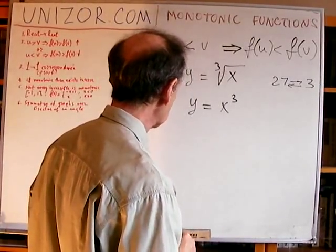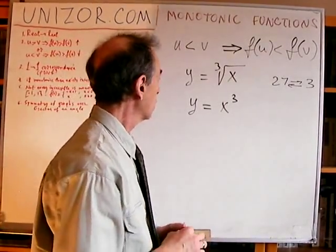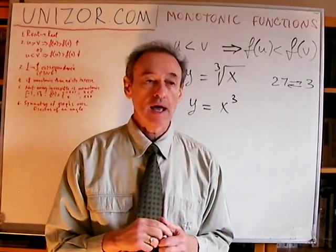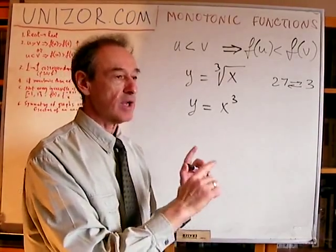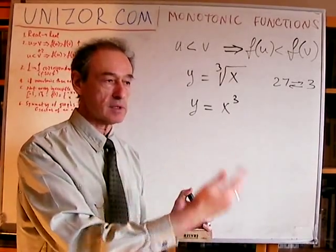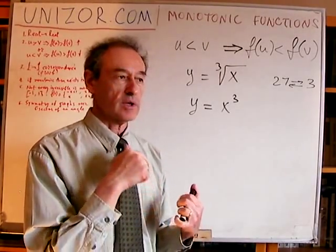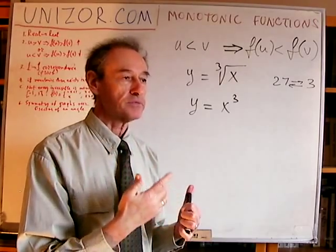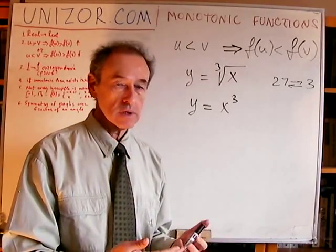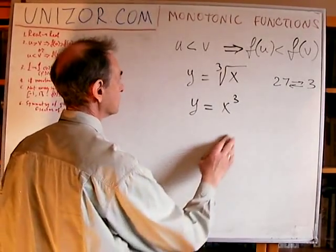We were talking about one-to-one correspondence and inverse functions. Here is an interesting point: we know every monotonic function establishes one-to-one correspondence and has an inverse function. But is the opposite true? If a function has an inverse function and establishes one-to-one correspondence, does it mean it is monotonic? The answer is no.